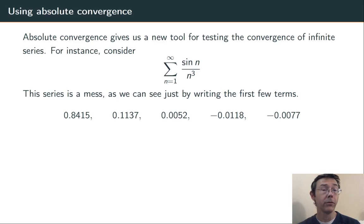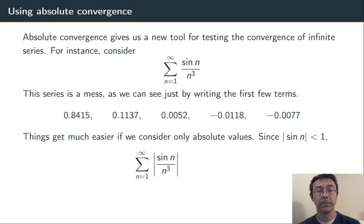However, if we start looking at absolute values, things get better fast. So let's do it. Sum n equals 1 to infinity of the absolute value of sin(n)/n^3. Now sine is always less than or equal to 1 in absolute value. So we have this inequality. The series is less than the sum of 1/n^3. That's a convergent p-series.